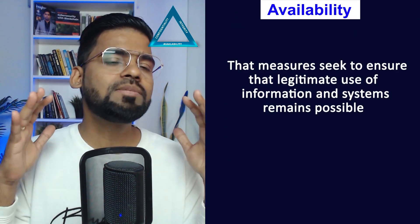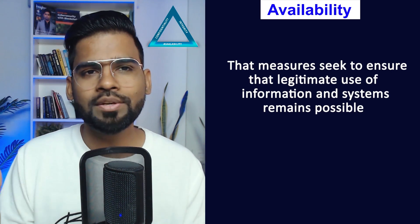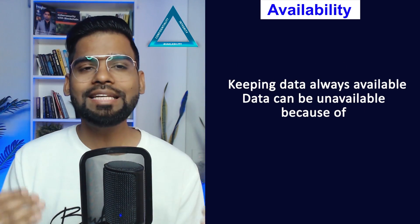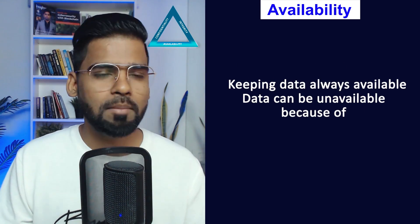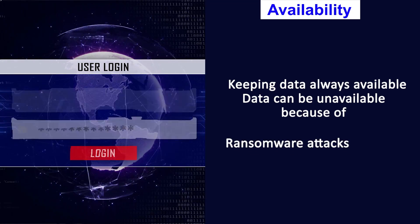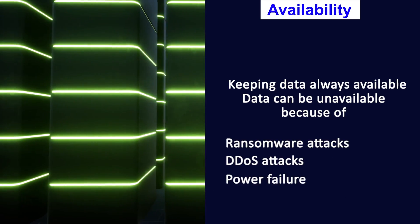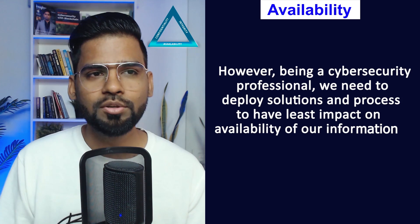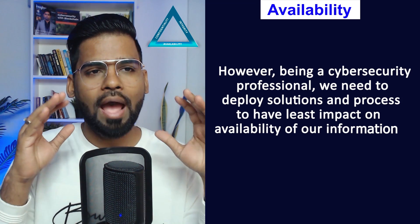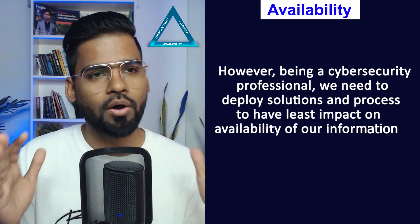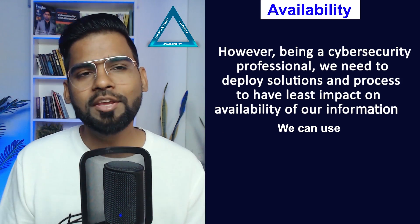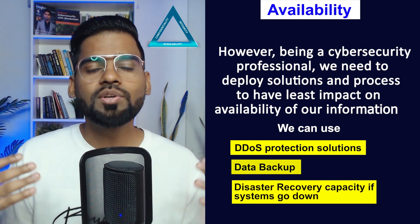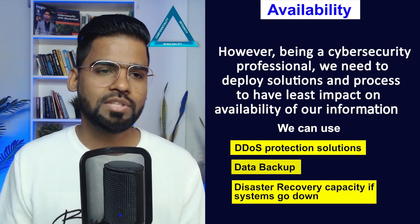Third is availability. This measures the seek to ensure that legitimate use of the information in the system remains possible — in a nutshell, keeping the data always available. Data can be unavailable because of ransomware attacks, DDoS attacks, power failure, and many other reasons. However, being cybersecurity professionals, we need to deploy solutions and processes to have at least the least impact on the availability of our information. We can make use of DDoS protection solutions, data backup replication solutions, disaster recovery capacity if the system goes down, and many more.